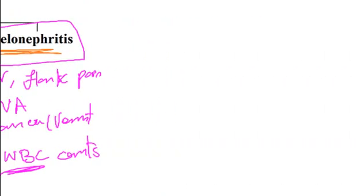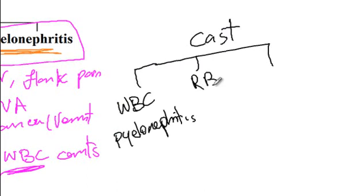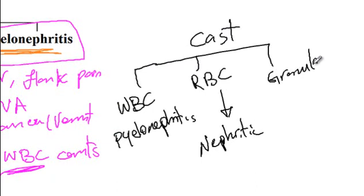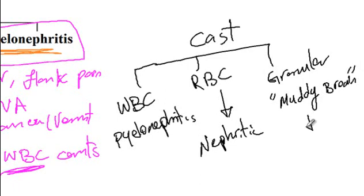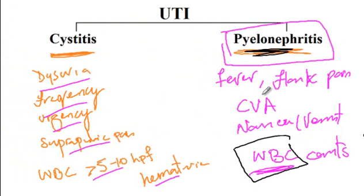It's worth noting that we can have different types of casts on urine examination. White blood cell casts are seen in pyelonephritis, red blood cell casts in patients with nephritic syndrome, and granular or muddy brown casts in patients with acute tubular necrosis. White blood cell casts are seen in pyelonephritis but none of the pyelonephritis-specific symptoms are seen in cystitis, while the symptoms of cystitis can all be present in pyelonephritis.